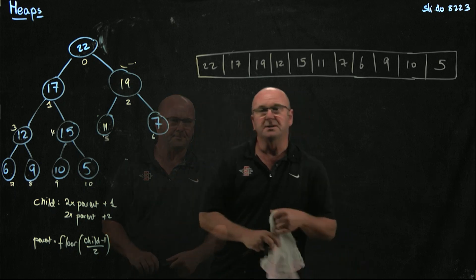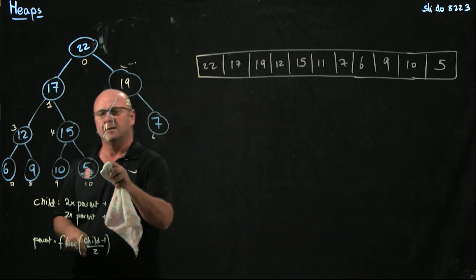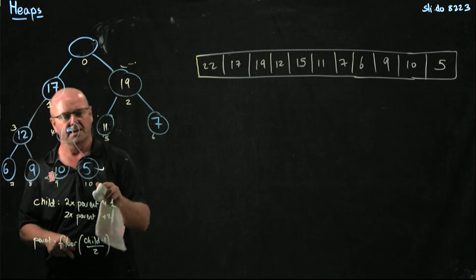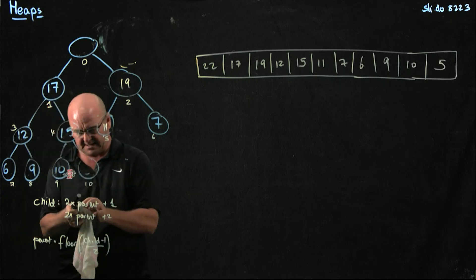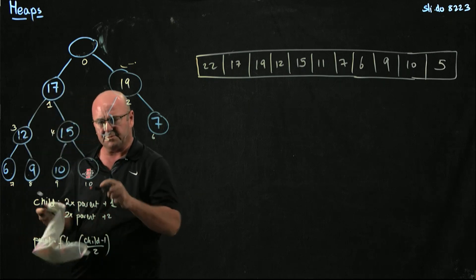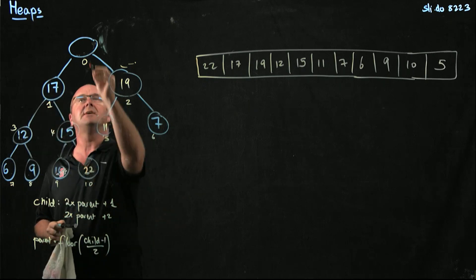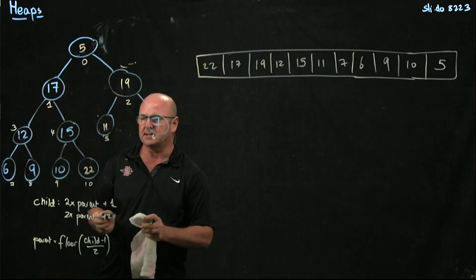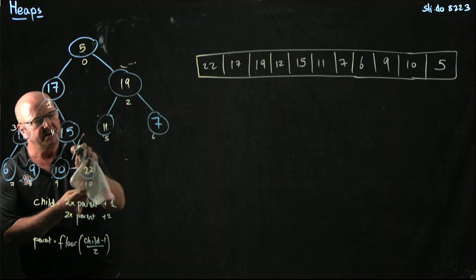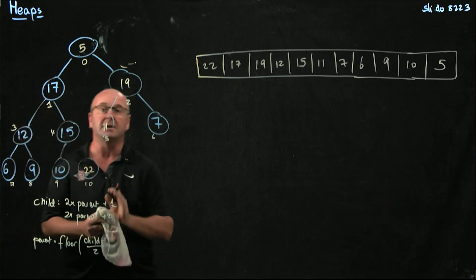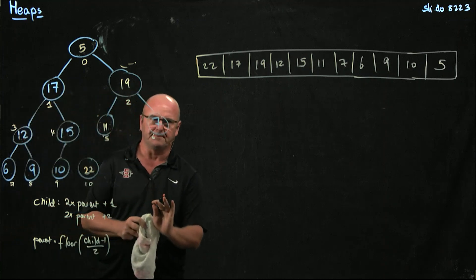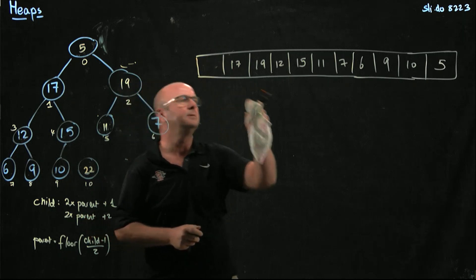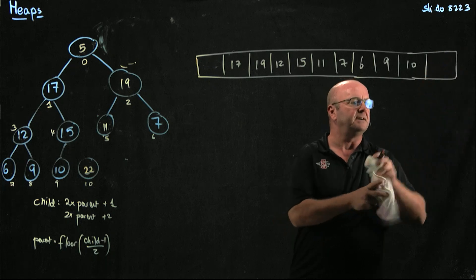So what we're going to do is we're going to take away the 22, we're going to swap in the 5 — put the 22 down here — and we're going to say the 22 is no longer a part of the heap, but we're going to keep it there. So we take the 22 and we swap it with the 5.